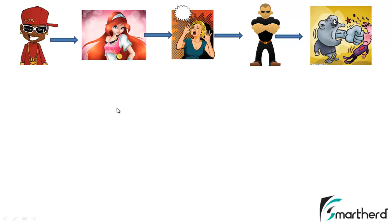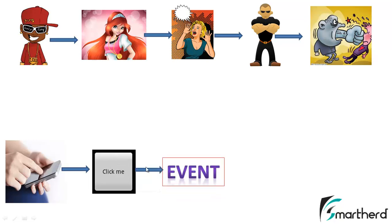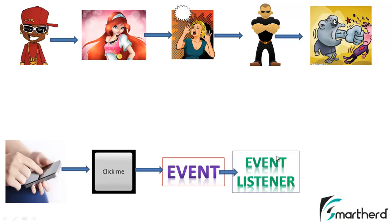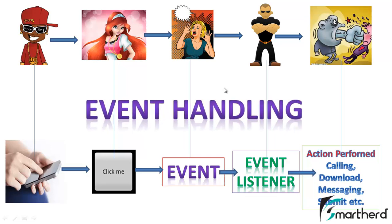Her boyfriend responds to her shout and performs an action, such as a tight punch on that boy's face. Similar things happen with Android widgets. When a user hits a button, it creates an event. This event is listened to by only one listener concerned with that button click. The event listener responds and ignites a functionality — such as downloading, calling, messaging, or submitting a registration form. This whole process is known as event handling in Android.